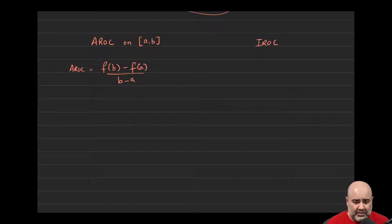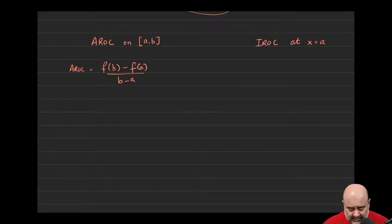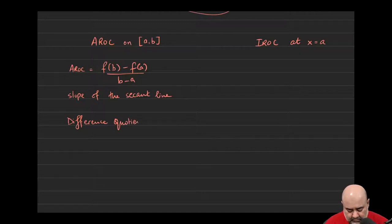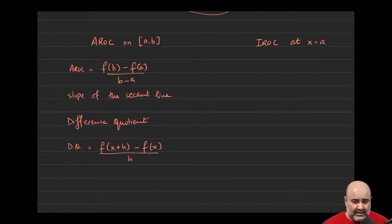The instantaneous rate of change is at x equals some specific number. The average is over some interval, some time period from a to b. The average rate of change also gives us the slope of the secant line, and it is also equivalent to the difference quotient. The difference quotient formula is f(x + h) minus f(x) all over h. The instantaneous rate of change is the limit of the average rate of change as the distance between the two points gets closer and closer to zero.